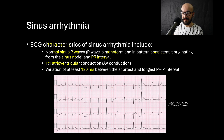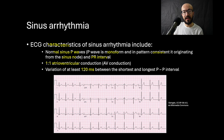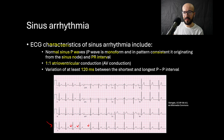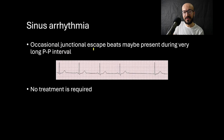On this ECG paper for a 19-year-old female, on the lowest part of the picture we have a strip of the second lead, and you can clearly appreciate some irregularity in the rhythm. There is a huge difference in the interval between consecutive P waves, and this is sinus arrhythmia.